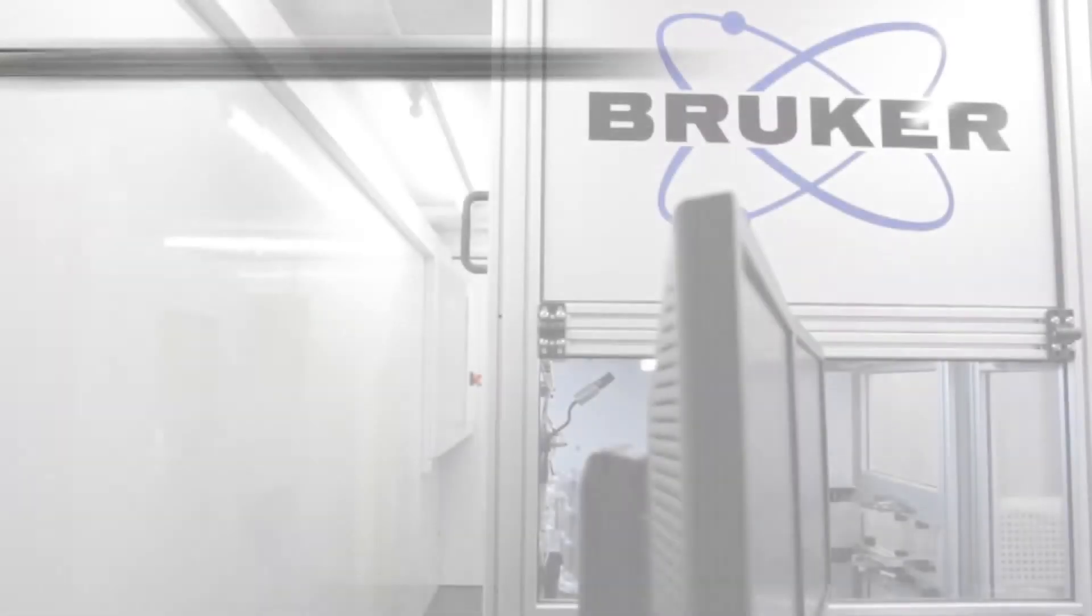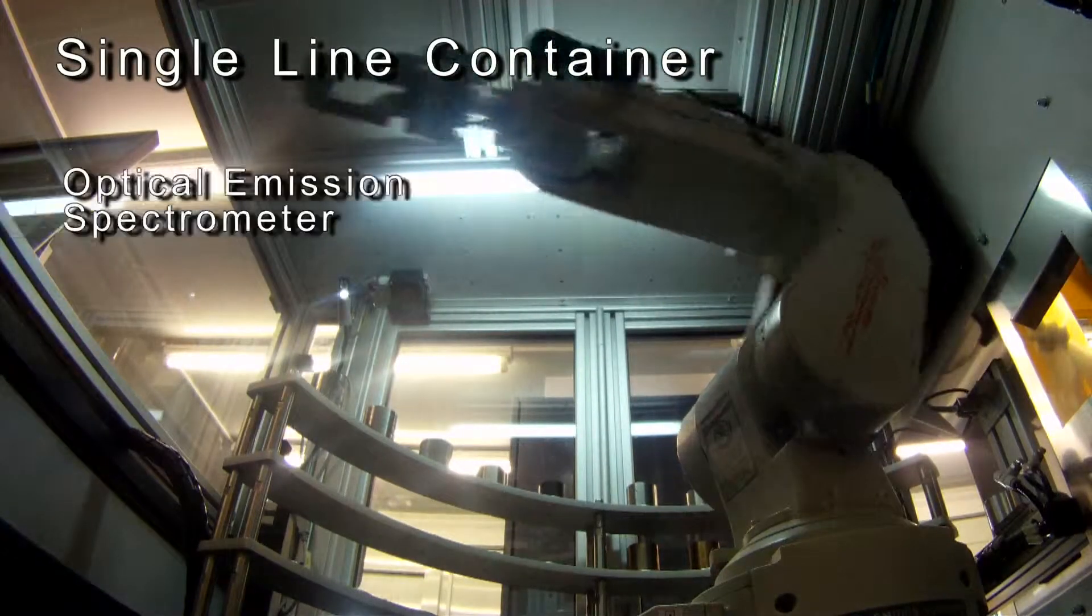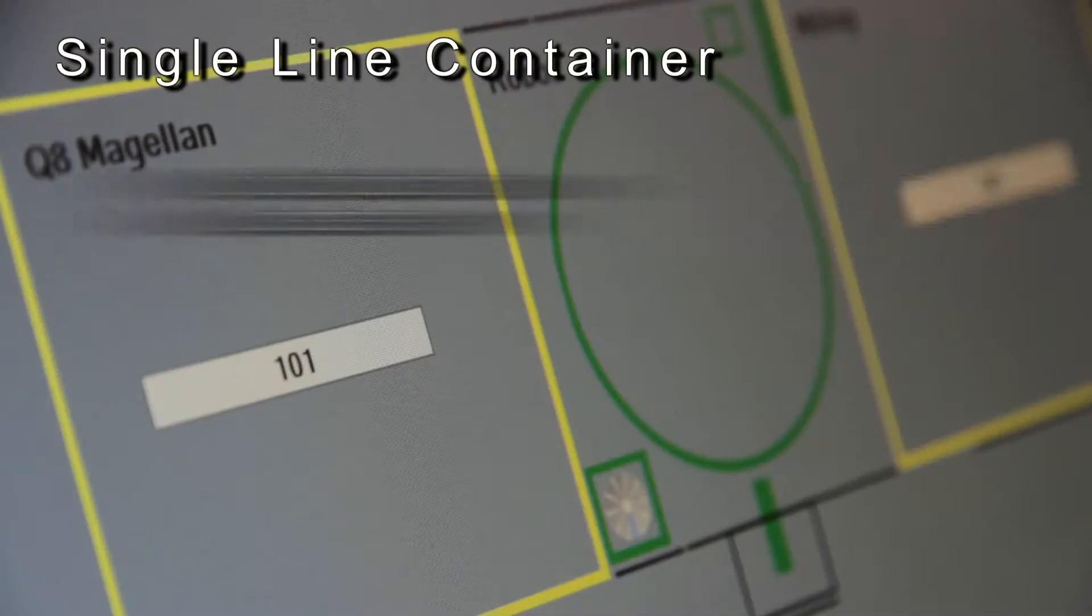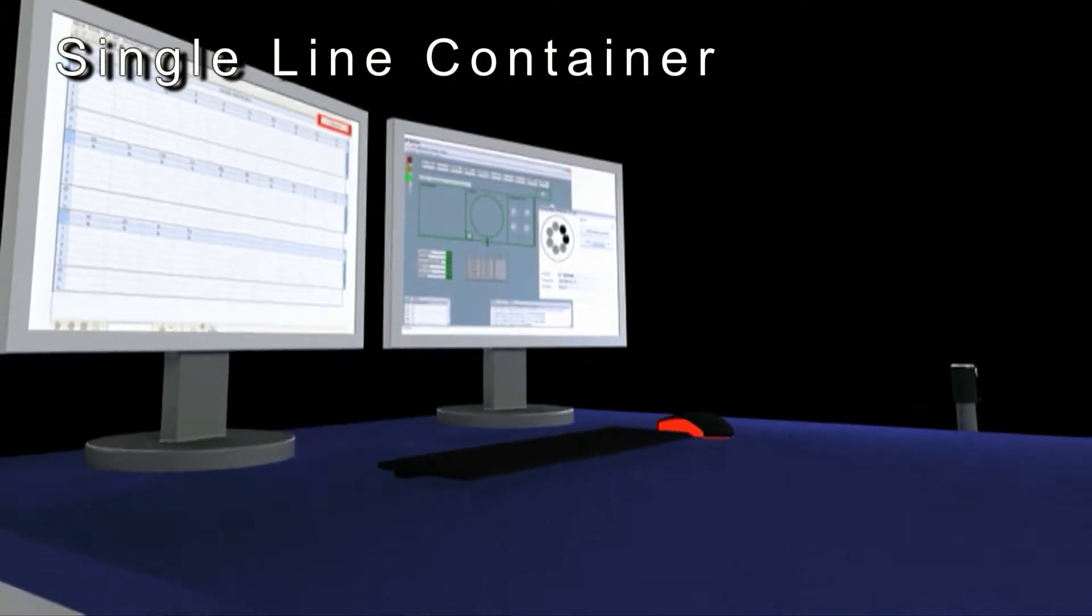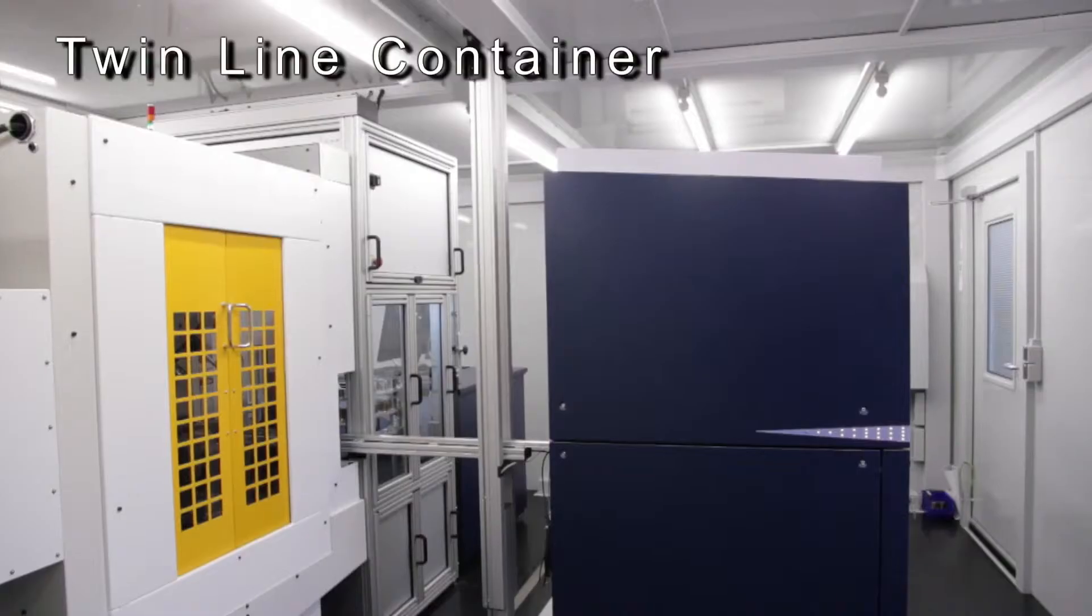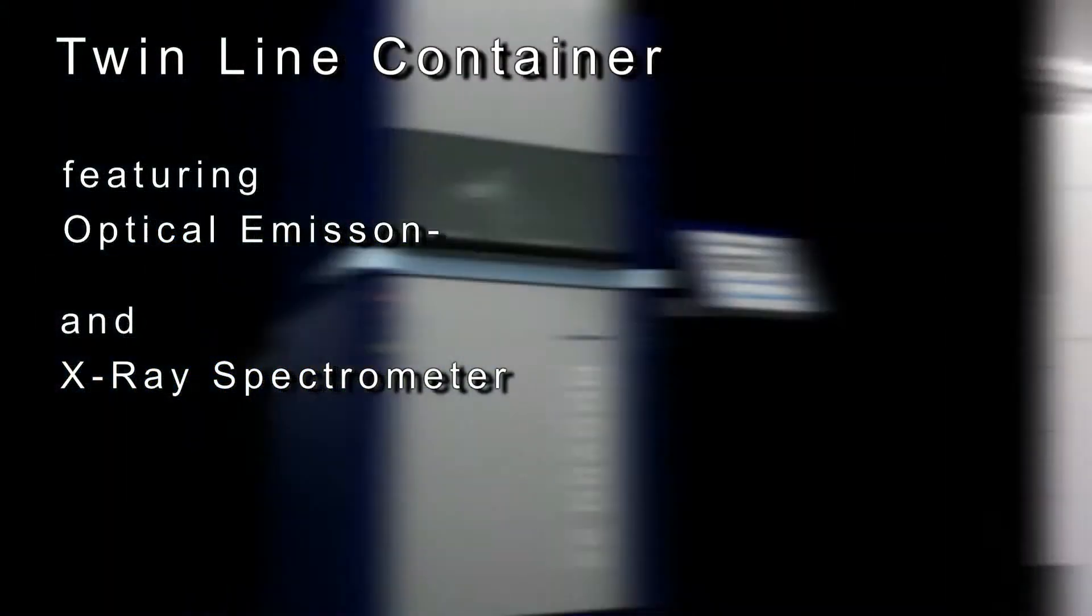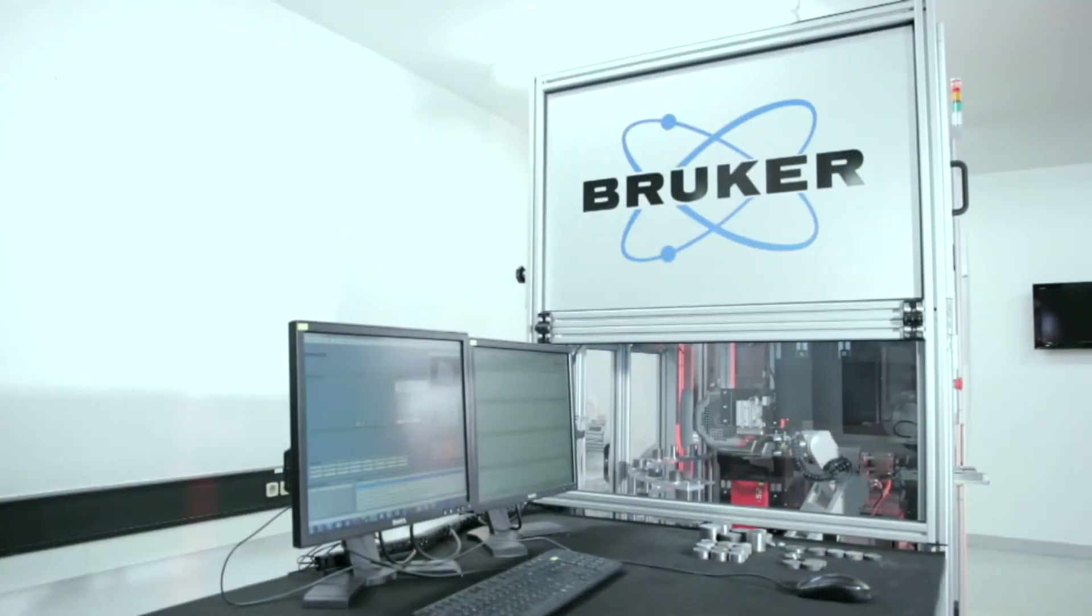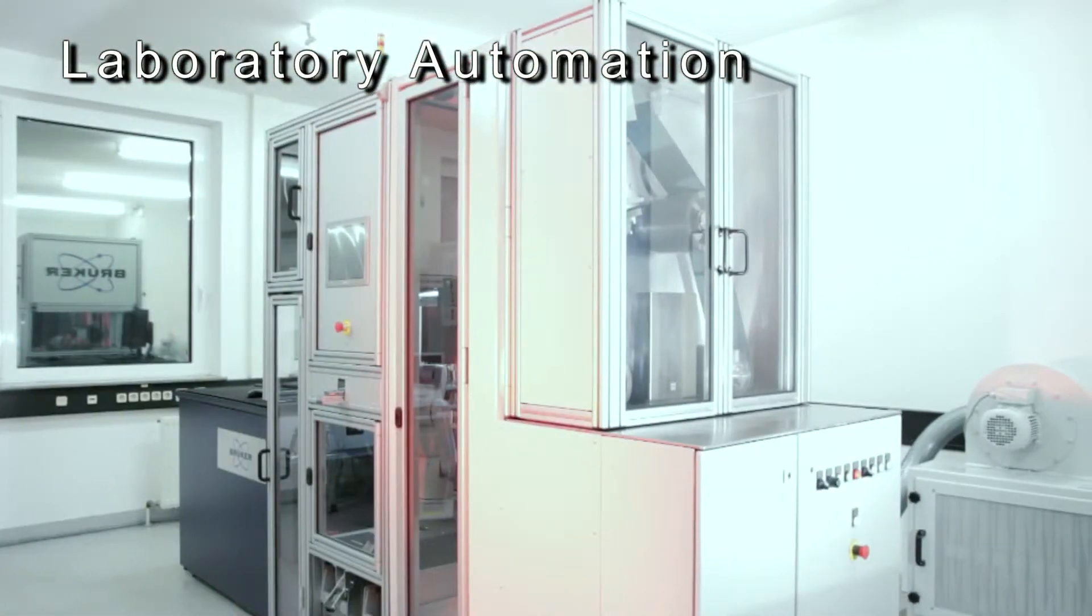The setup of the analysis automation is possible in a single line container with optical emission spectrometer, or a twin line system featuring optical emission and X-ray spectrometer, or as a laboratory automation to fit into existing room space.